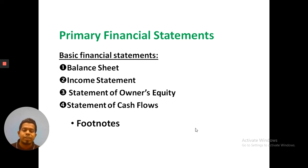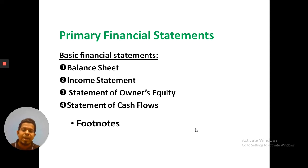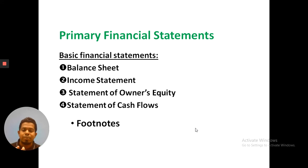The balance sheet basically shows the assets, liabilities, and owner's equity of a company. At a specific point in time, it reflects the company's asset condition, liability condition, and owner's equity condition. The income statement, on the other hand, covers the flow over a financial year.